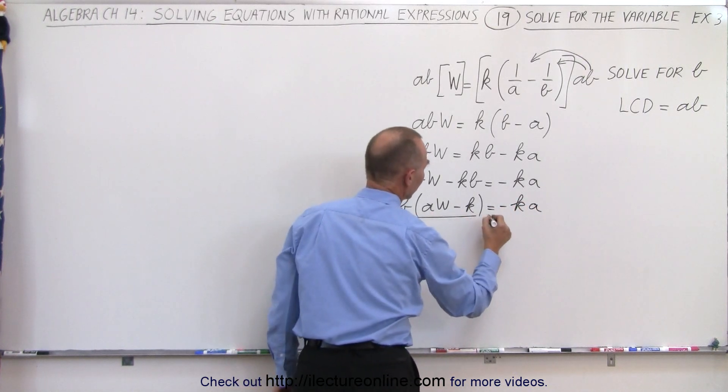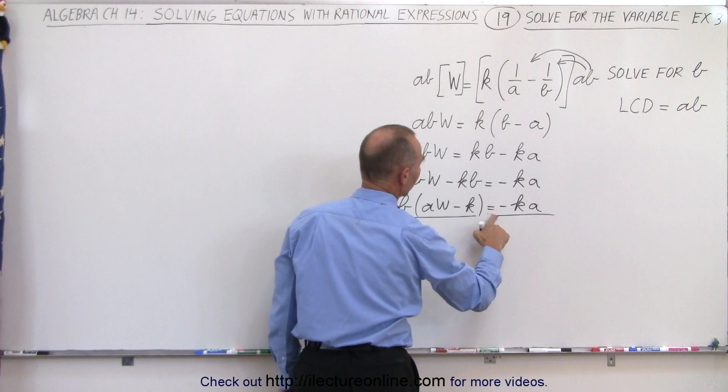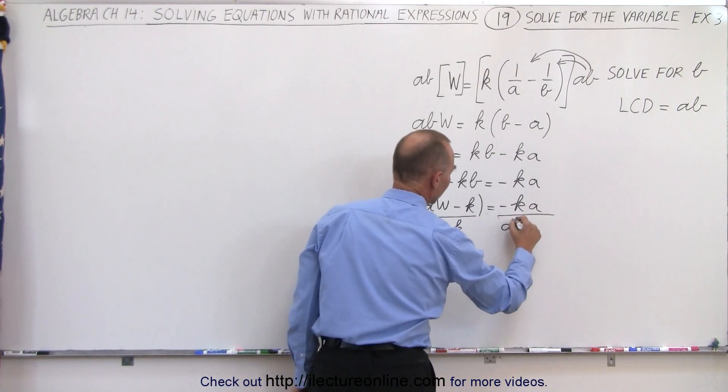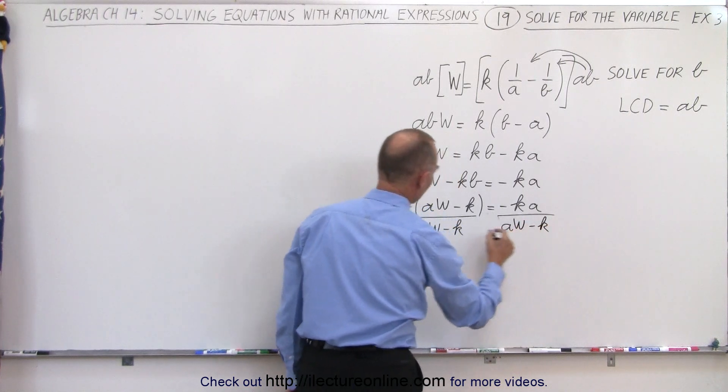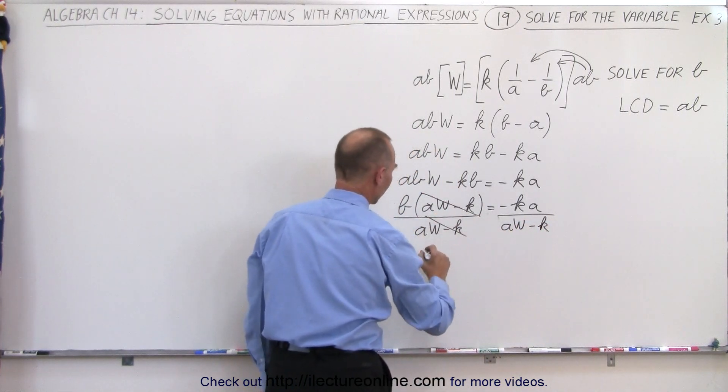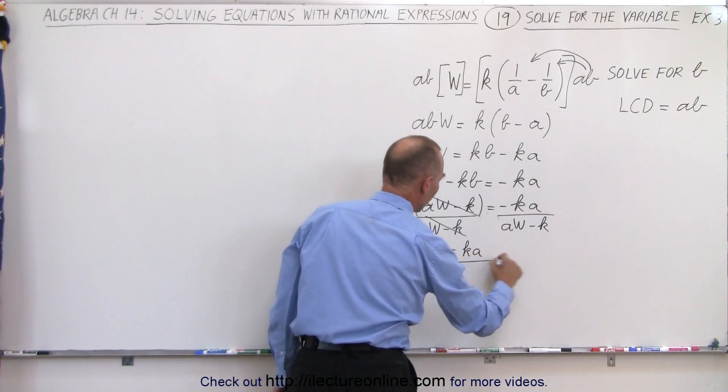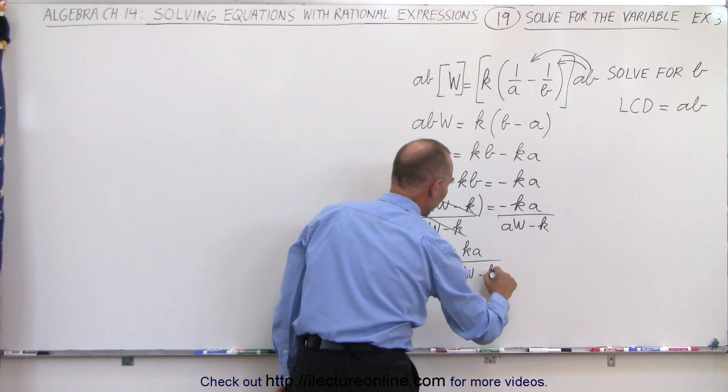And now we're going to divide both sides by aw minus k. So this will cancel this out, so we're left with b is equal to minus ka over aw minus k.